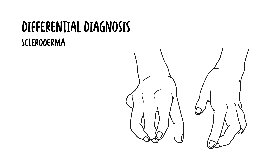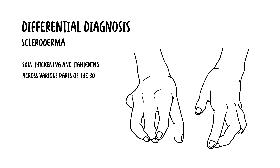Finally, another differential is scleroderma. Scleroderma involves skin thickening and tightening across various parts of the body, including the hands, which might mimic Dupuytren's. However, in scleroderma it is all the fingers and the hands that become tight, and you can also get tightening elsewhere around the body, such as the legs, feet, and internal organs.